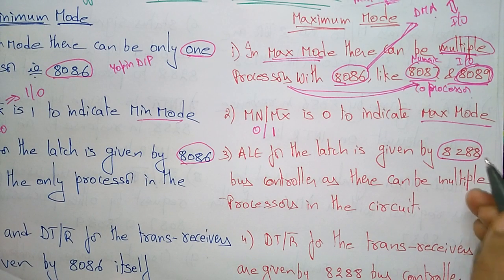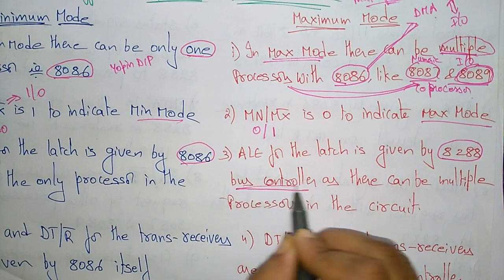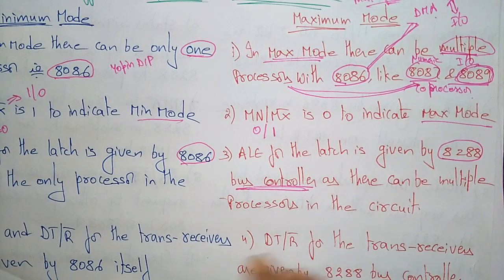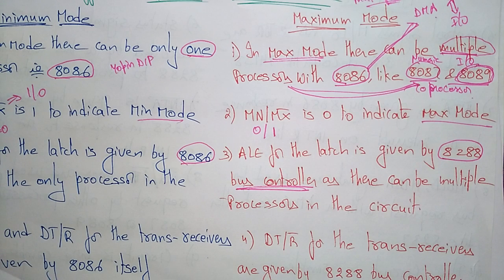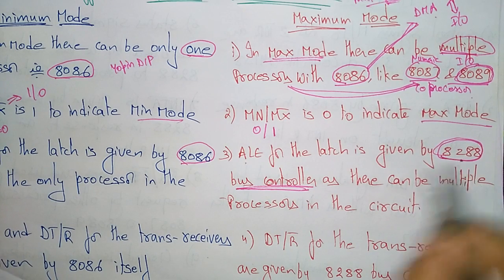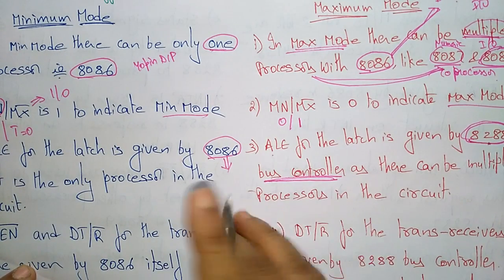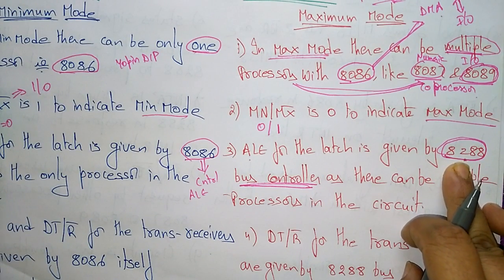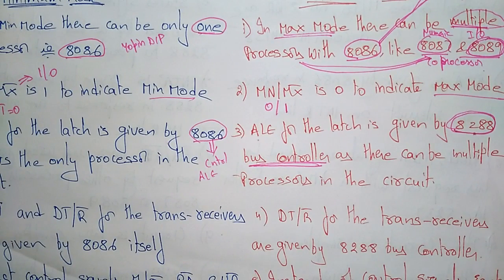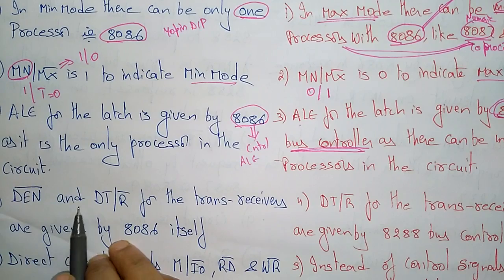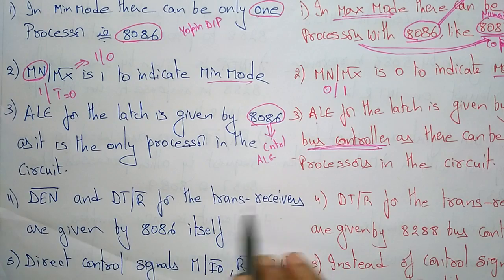Whereas in maximum mode, the ALE signal for the latch is given by the 8288, which is a bus controller. The 8288 controls the system bus. Since there are multiple processors in the circuit — each performing their own operations like I/O, DMA, and numeric operations — the ALE signal is generated by the bus controller 8288, which determines to which processor the bus must be sent.